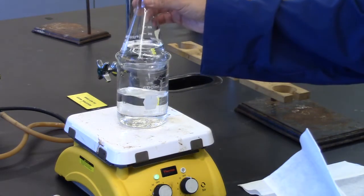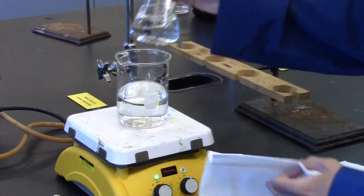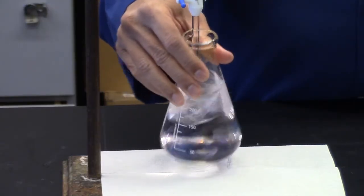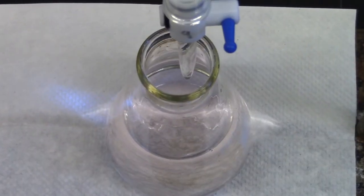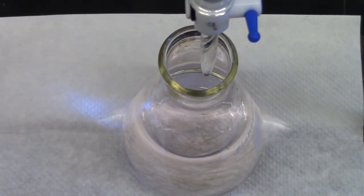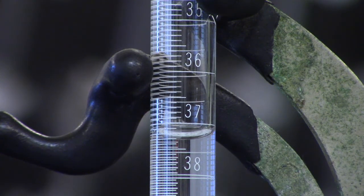At the end of the hour, remove the flask from the bath and unstopper it. Titrate the solution to a faint pink with the 0.25 molar sodium hydroxide. Record the final burette reading.